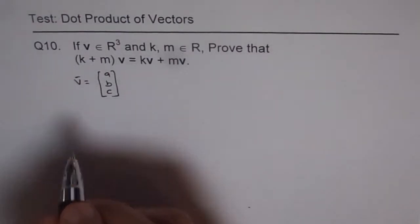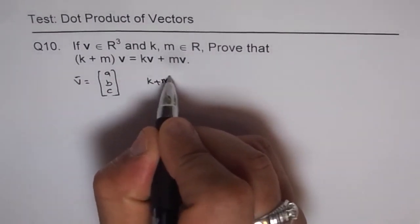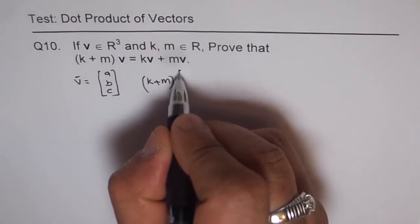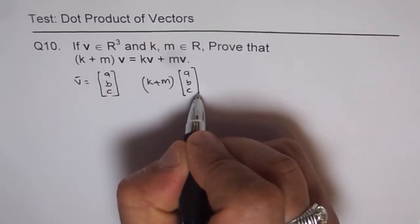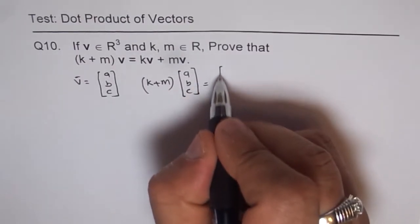So now we have k plus m. These are scalars. So this is scalar multiplication by the vector, which is (a, b, c). Now, when you do this multiplication, what do you get?